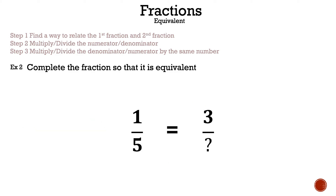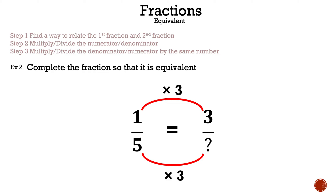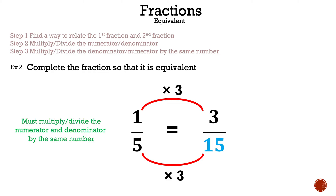Example two: complete the fraction so that it is equivalent. This time we have to compare the numerators. How do you get from one to three? Times three. One times three is three. Now we need to do the same to the denominator. We need to multiply five times three, which gives me fifteen. So once again, whether you multiply or divide the numerator and denominator, they have to be by the same number.